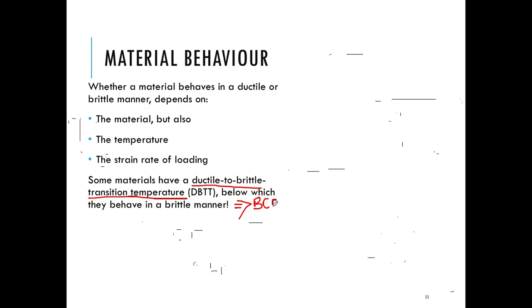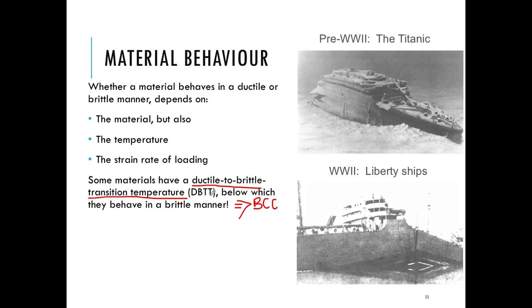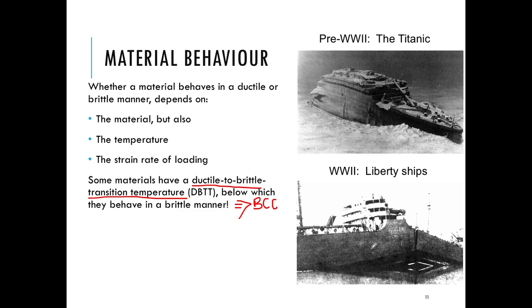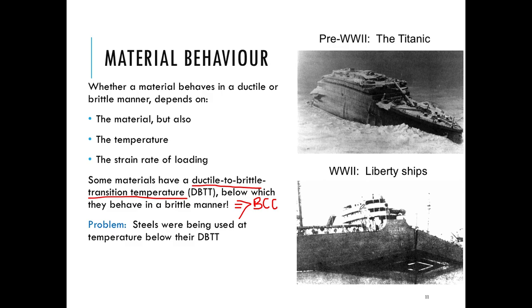This is very common for BCC (body-centered cubic) materials, which have this ductile-to-brittle transition temperature (DBT), such that if the material is operating at a low temperature it behaves in a brittle manner, whereas at a high temperature it behaves in a ductile manner. The ships that fractured — including the Titanic — failed because they were operating below their ductile-to-brittle transition temperature, making them much more susceptible to brittle fracture. As a designer, we must ensure that we remain above the DBT for materials which possess it.